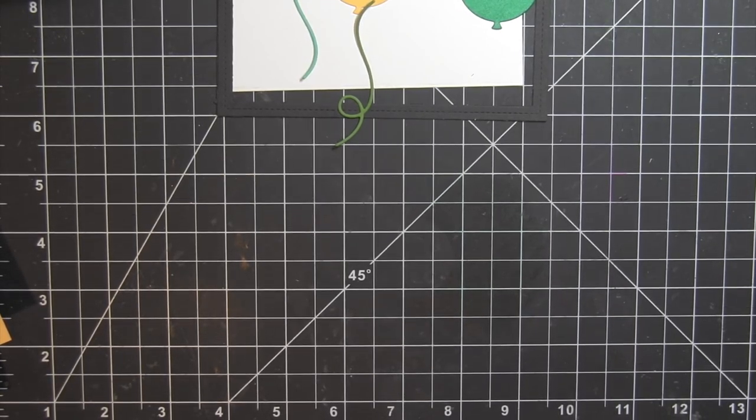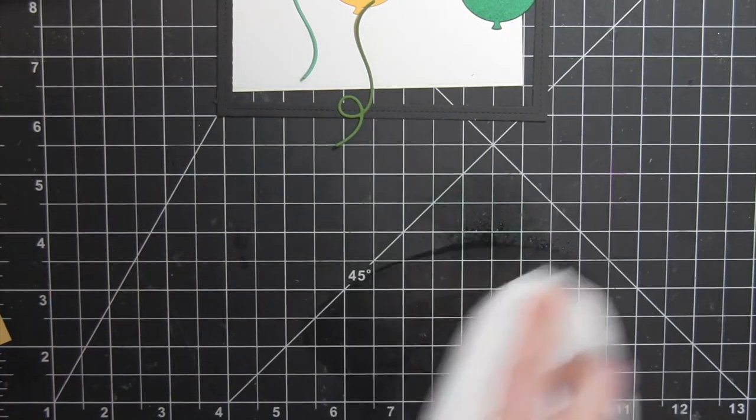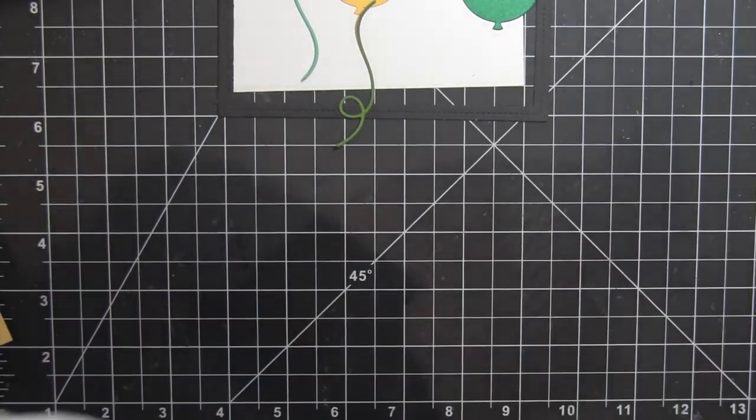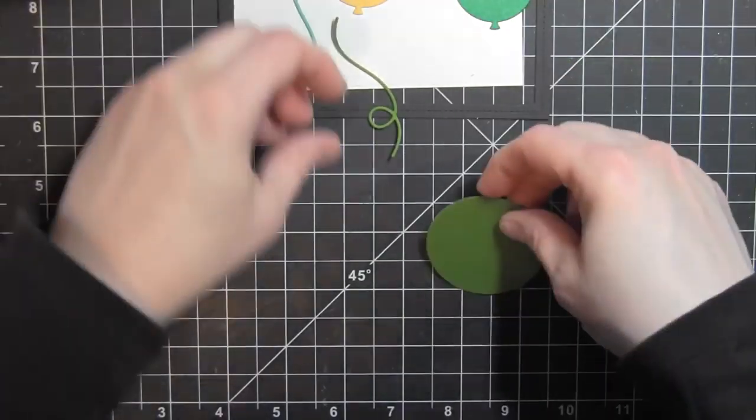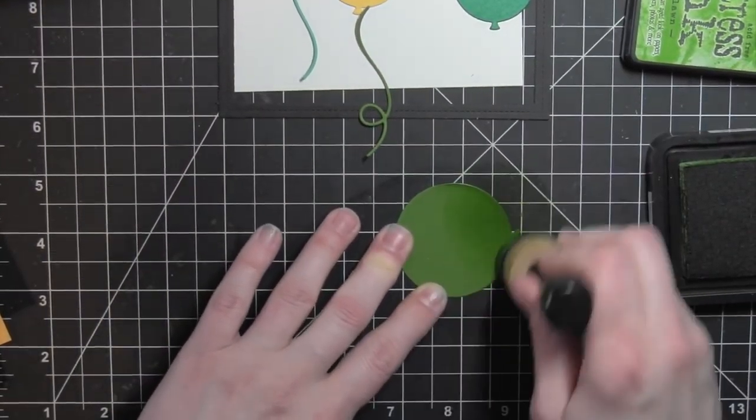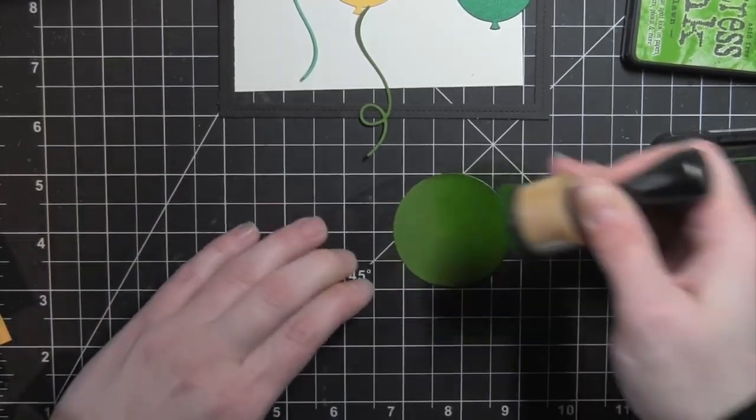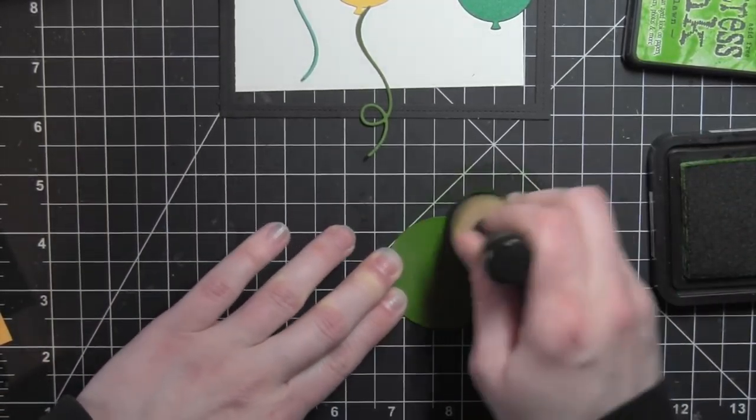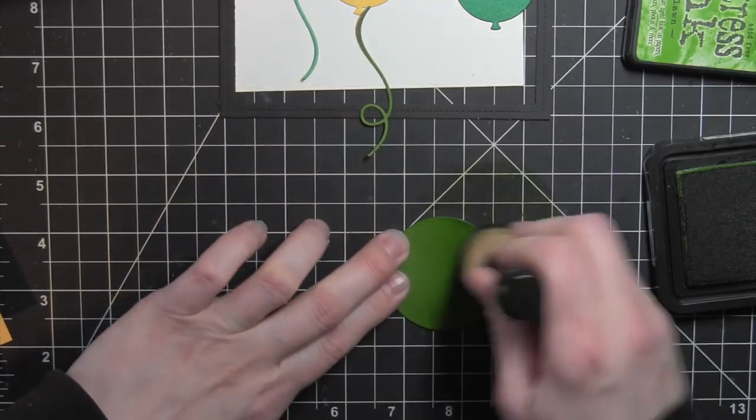After I have done that balloon, I'm going to move on to my next balloon and apply distress ink. However, I don't want any cross-contamination of the inks on the balloon, so I'm going to clean up the ink from my mat here and then move on to the green balloon and apply Mowed Lawn Distress Ink.